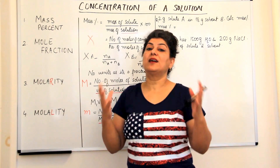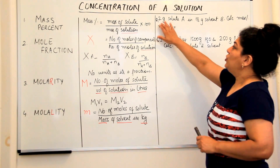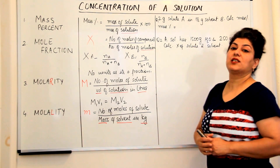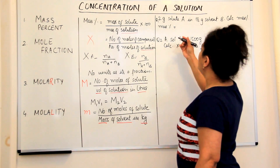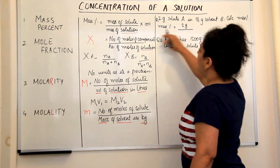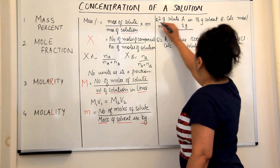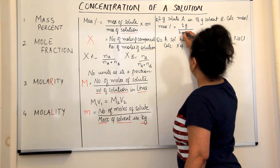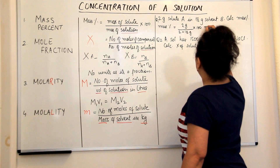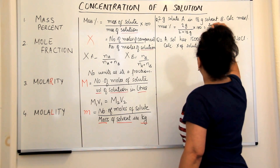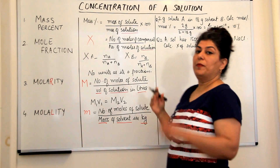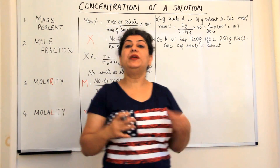So this is the first way of expressing the concentration of a solution. Here is a problem: you have 2 grams of solute A in 18 grams of solvent B — find out the mass percentage of A. The mass of A is 2 grams divided by the mass of the solution, which is 2 plus 18 equals 20 grams, into 100. That gives us 2 upon 20 into 100, which equals 10%. So the mass percentage of solute A in solvent B is 10%.